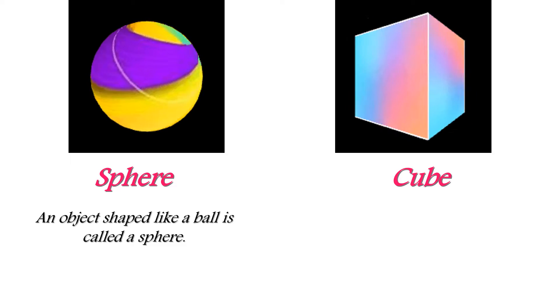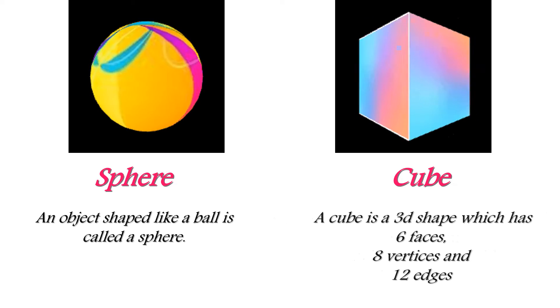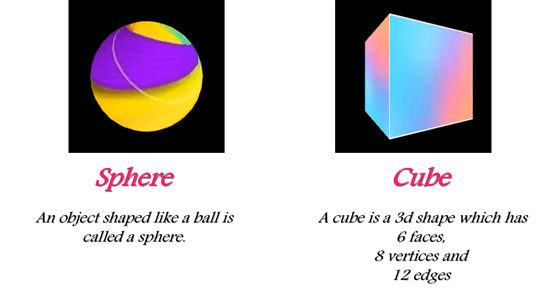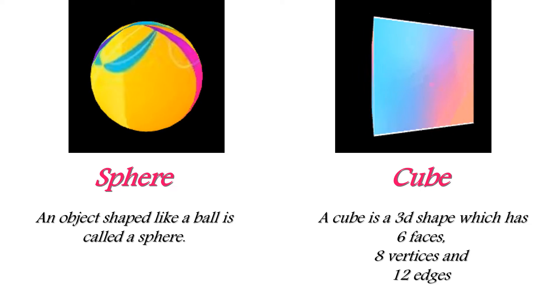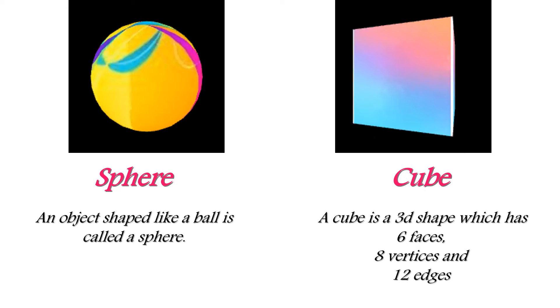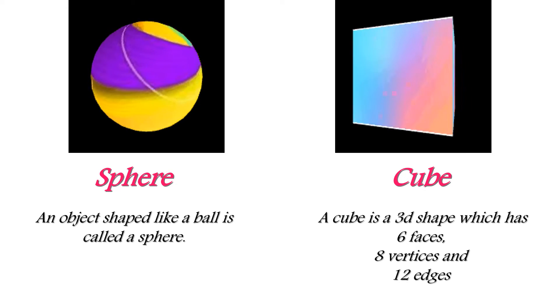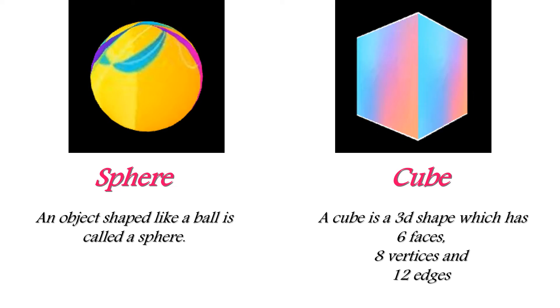The next shape is a cube. A cube is a 3D shape which has 6 faces, 8 vertices and 12 edges.